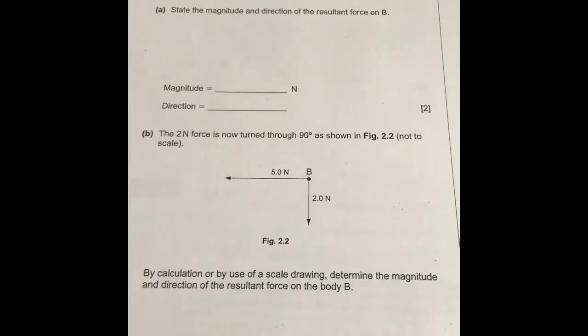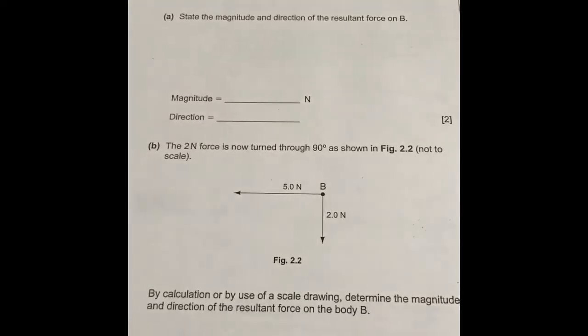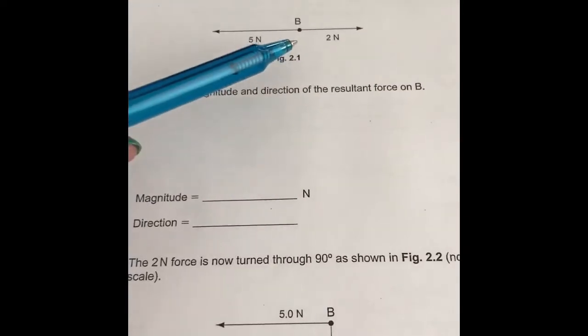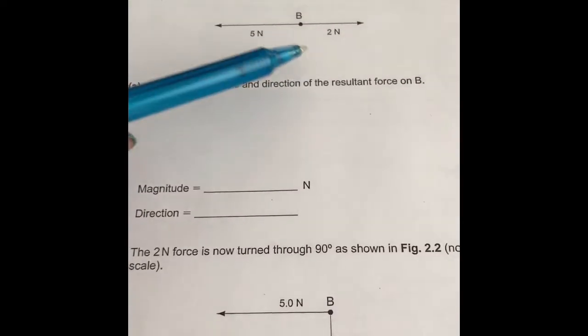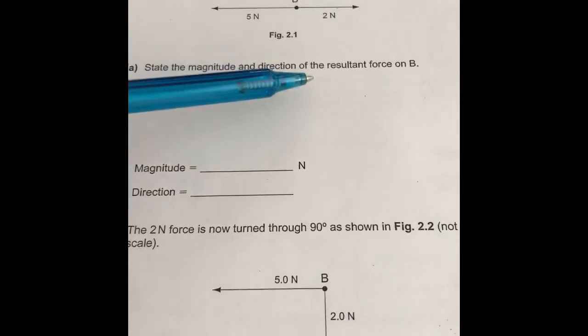Okay, this is the CIE AS1 January 2012 paper, question 2 on vectors. So here we have two forces acting on a body B, 5 newtons to the left, 2 newtons to the right. State the magnitude, the size, and the direction of the resulting force.